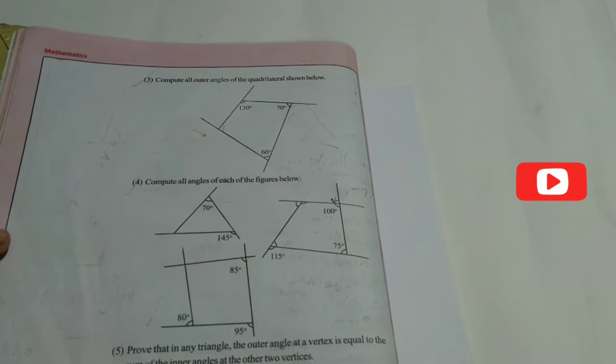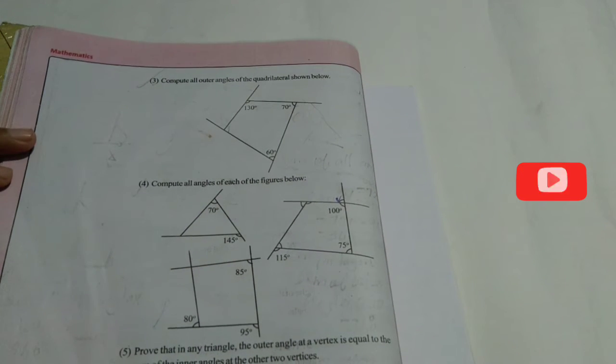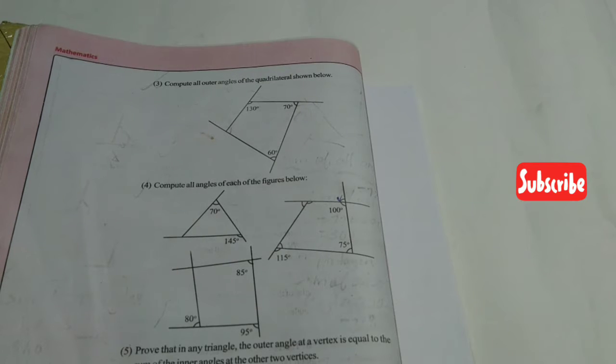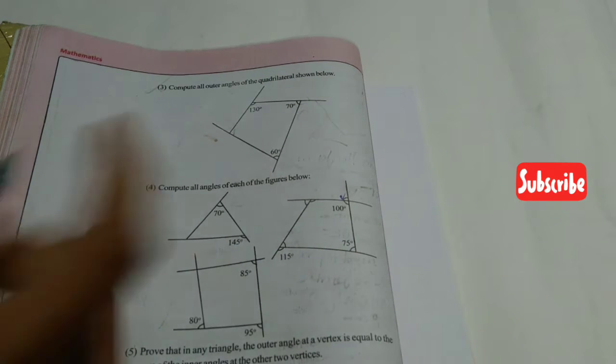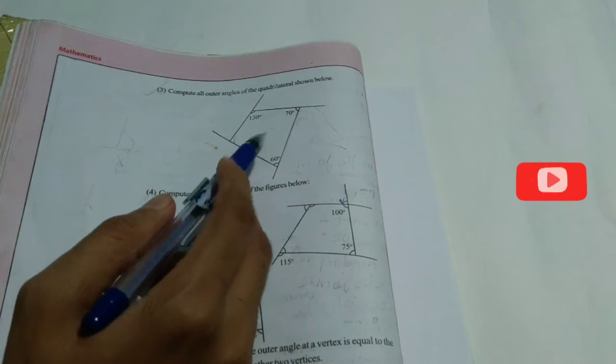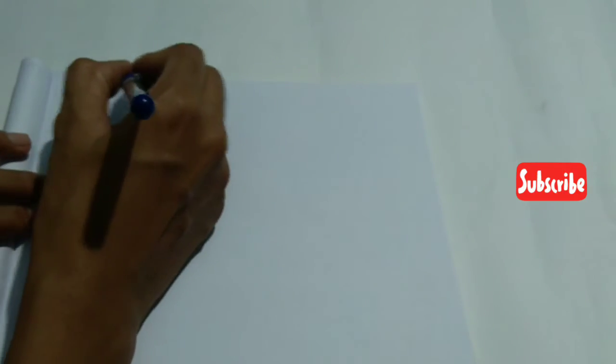In this class, we have three exercise problems in mathematics. Calculate all outer angles of the quadrilaterals. We have two quadrilaterals. This is the outer angles of the quadrilaterals. We have no idea. This is a figure.